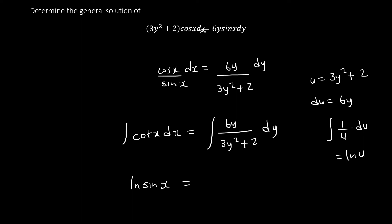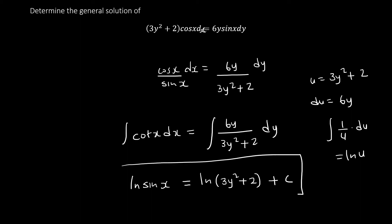So the answer is ln(3y² + 2) = ln|sin x| + c. This is your general solution — do not simplify further. If a point were given, we would substitute x and y to solve for c. These first order questions are usually worth only three marks; second order questions carry more marks.